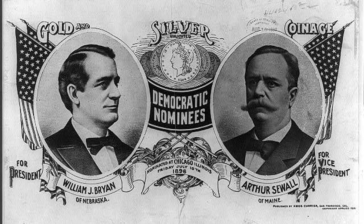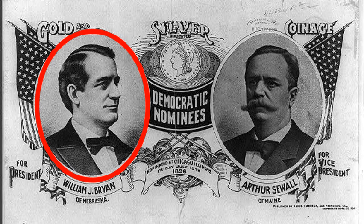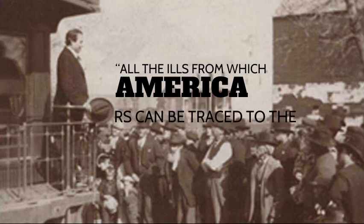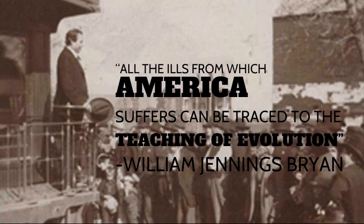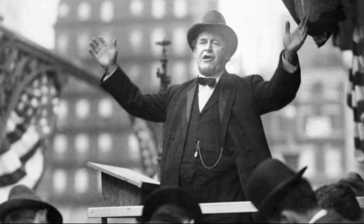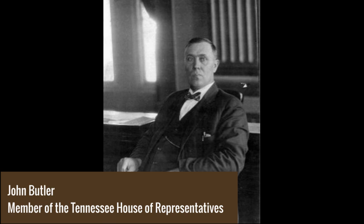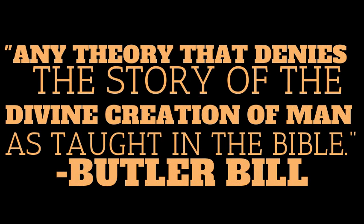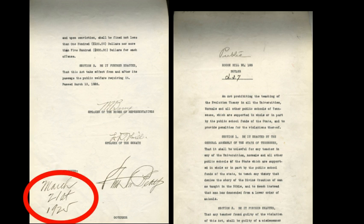It was during this time that ex-Secretary of State and three-time Democratic presidential candidate William Jennings Bryan, a conservative Protestant, became the figurehead of the anti-evolution movement. Copies of his speeches were delivered to Tennessee legislator John Butler, who introduced the Butler Bill to the Tennessee House of Representatives on January 21st, 1925. The bill prohibited any theory that denies the divine creation of man as taught in the Bible, and on March 21st it became the first law in America to ban the teaching of evolution.